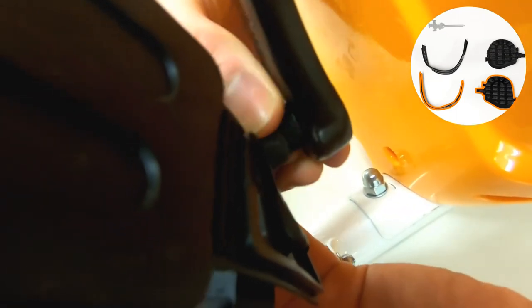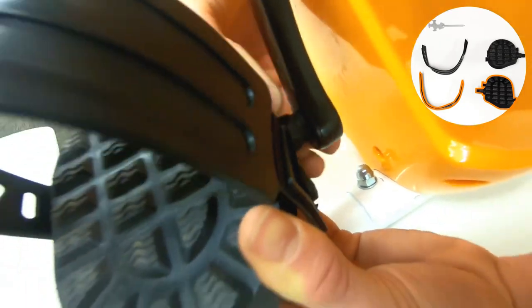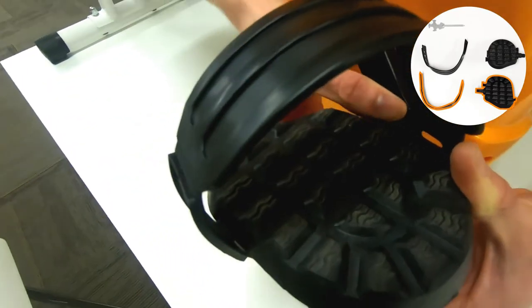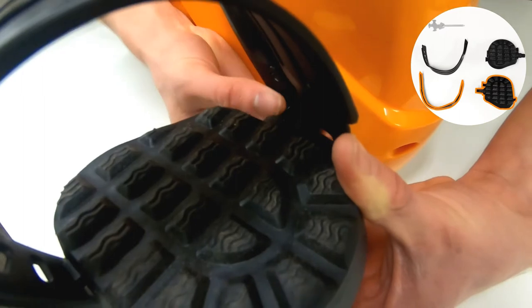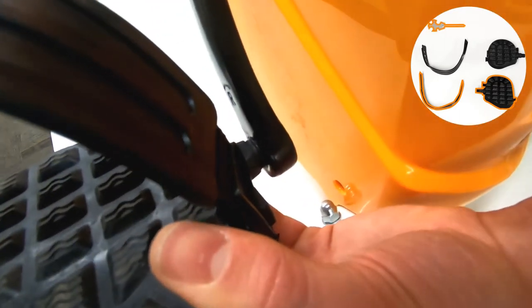Attach the pedals by inserting the threaded end into the crank and hand tightening. The tightening direction for each pedal is marked on the crank. For the right pedal this will be clockwise, and for the left pedal it will be counterclockwise.